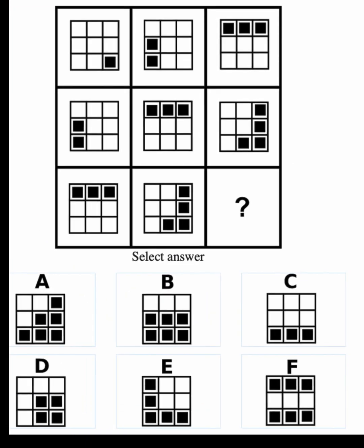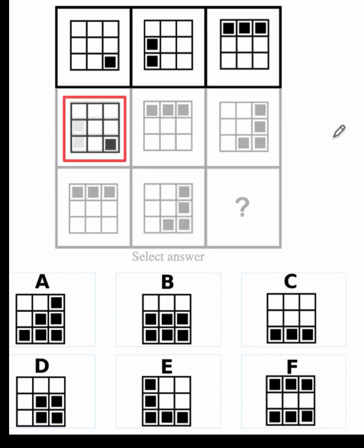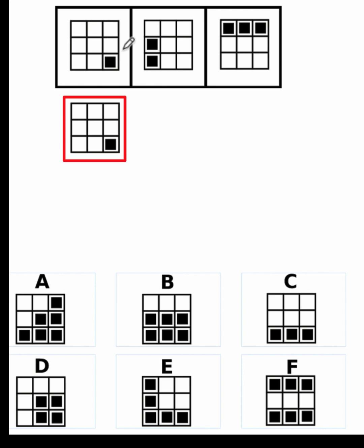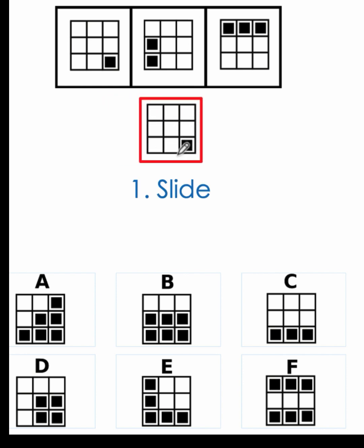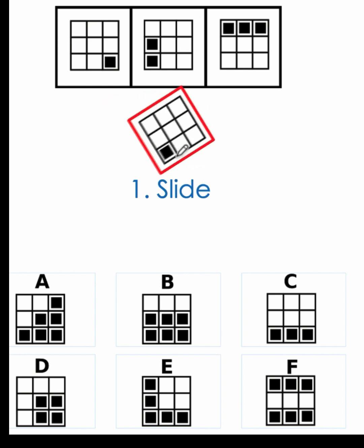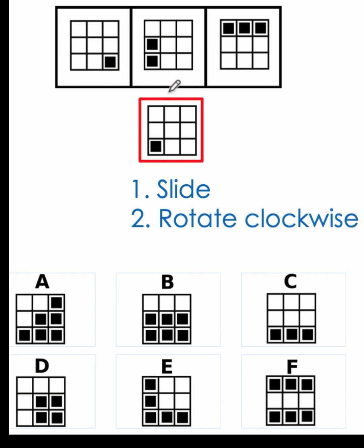Now let's solve this problem together. Let's begin by identifying the rules that govern this pattern. Let's remove the lower two rows and replicate the first picture on the left. To create the second picture, let's slide that picture, but they are not the same. So let's rotate the picture clockwise — but still they are not the same. But notice that if we add one more square, then we can have the exact replica of the original picture in the second column.